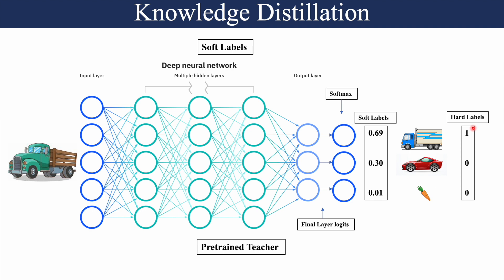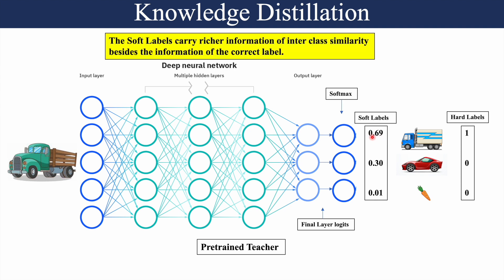If we compare the information content of hard labels versus soft labels: the hard labels tell us this image is a truck, that it is not a car and not a carrot, but there is no information about the interclass similarity with all the other classes. In contrast, the soft labels tell us the actual label via the dominant probability, but also that there is a 30% probability the image looks like a car because both have wheels and a similar vehicle structure, and only a 1% probability it looks like a carrot. So the soft labels carry richer information about interclass similarity, besides the correct label.